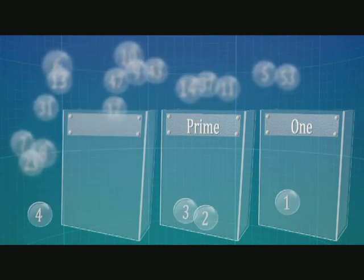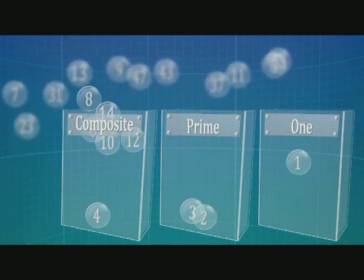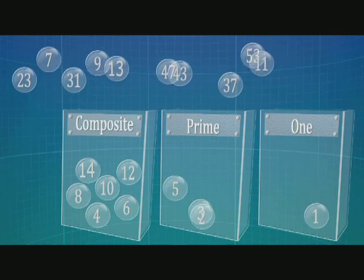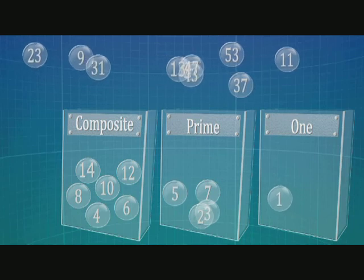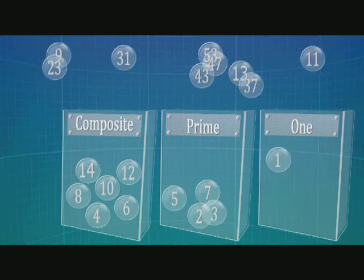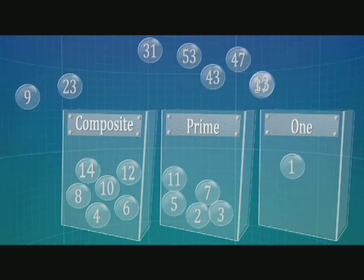Non-primes are also known as composite numbers. Now all even numbers except 2 are clearly composite. 5 is also a prime. Does that mean that all odd numbers are primes? Let's take 9. The factors are 1, 3 and 9. So 9 is not a prime.